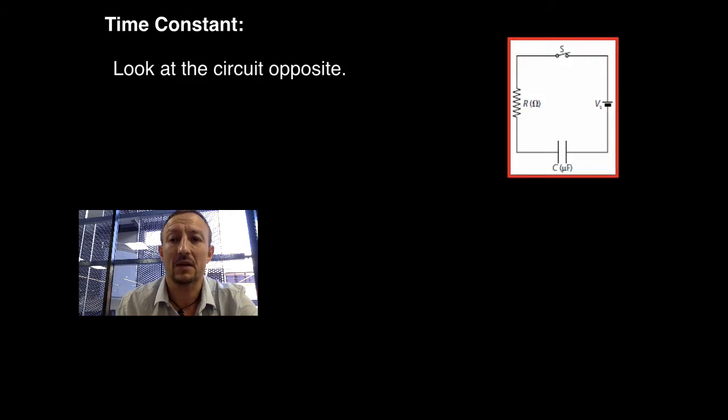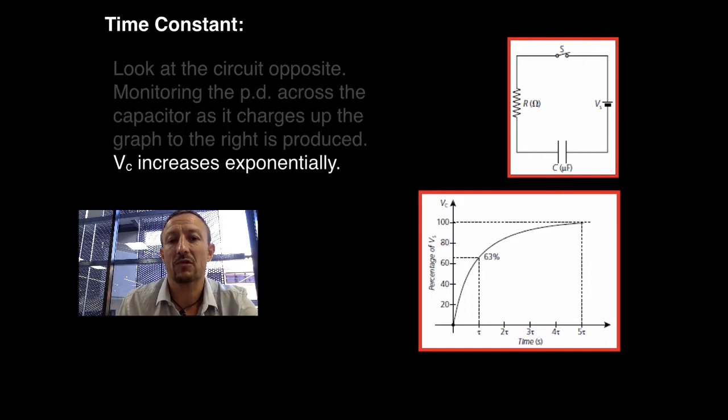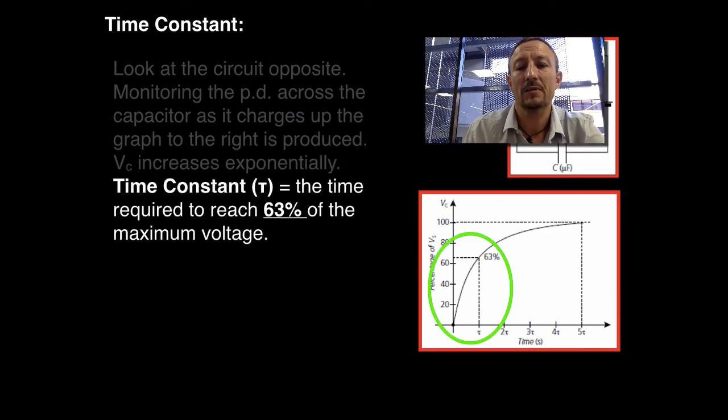Now if you look at this circuit that we've got opposite here, we've got a voltage supply, we've got a capacitor in microfarads, a resistor in ohms, and a switch. Now if we were basically to monitor the potential difference or the voltage across the capacitor as it charges up, we would get a graph exactly as we saw in the last video on charging. So we get this exponential graph as VC begins to increase. Now basically the time constant is given for 63% of the maximum voltage to be achieved.